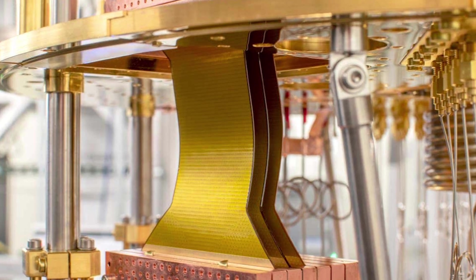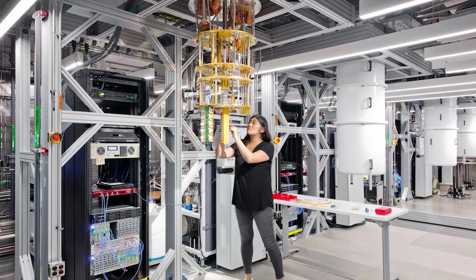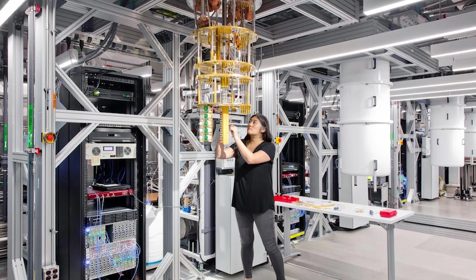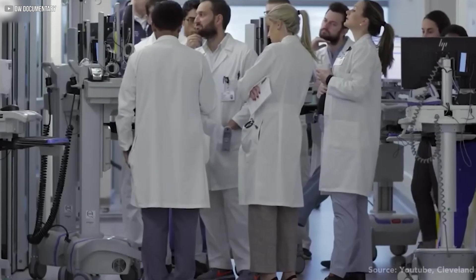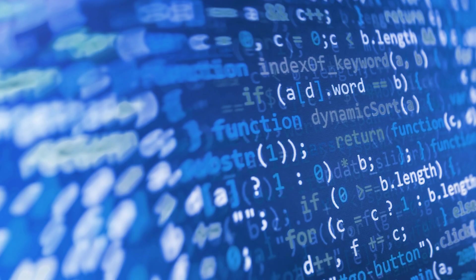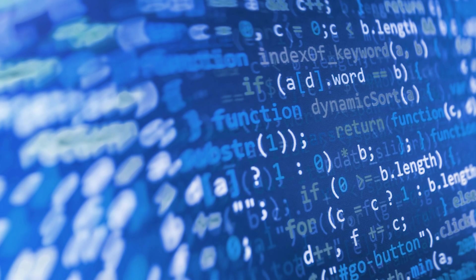But quantum machines are fragile. Their strength depends on something called coherence, when qubits vibrate in perfect harmony. A slight disturbance—heat, noise, even a photon—can break that harmony, causing decoherence and destroying calculations.